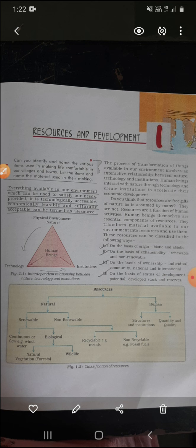Whatever production is done using technology, a cost is set for that production — a producing cost is calculated. Based on that cost, the value is derived; money is assigned to it, saying this product costs this much. And what is culturally acceptable — what the whole society accepts, what is accepted within our culture — that is also part of what makes something a resource.